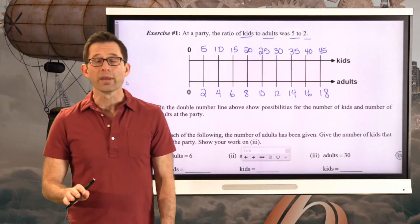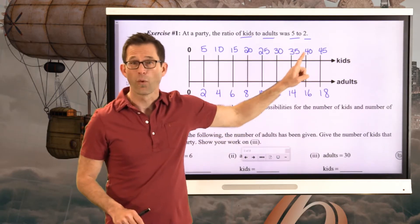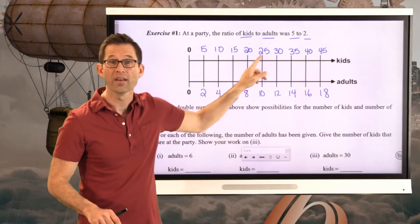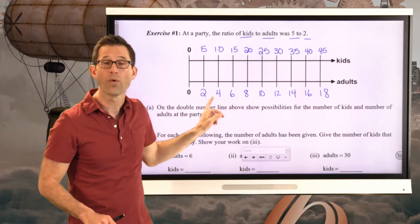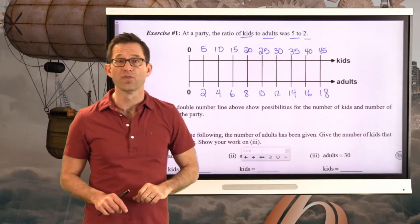And this really helps us visualize a lot of ratios that are equivalent to 5 to 2. For instance, 40 to 16, 20 to 8, 30 to 12, 10 to 4. All of those ratios are equivalent to the 5 to 2 ratio.